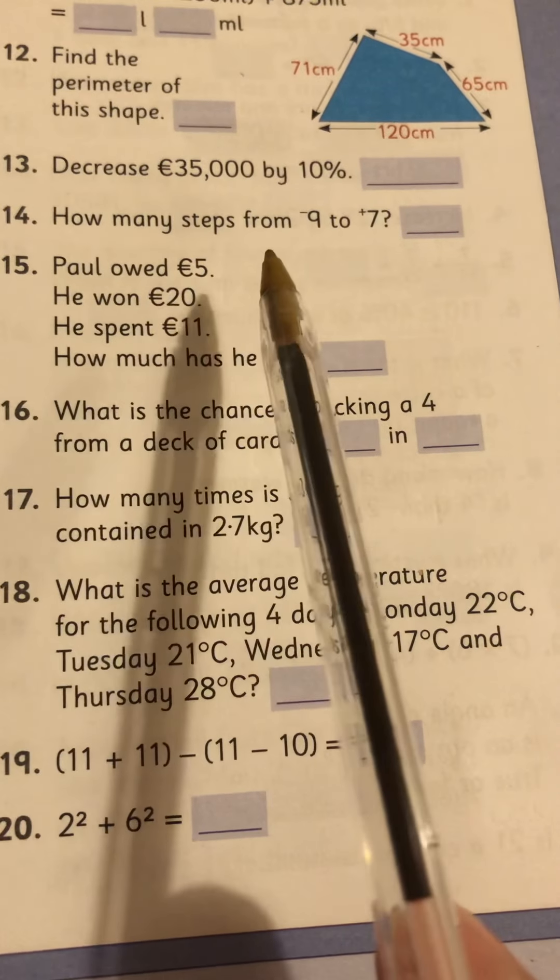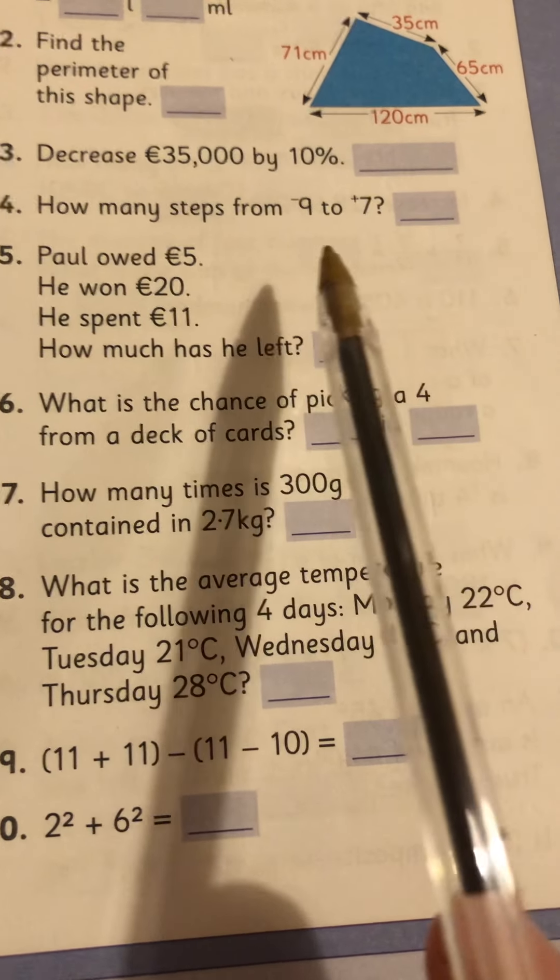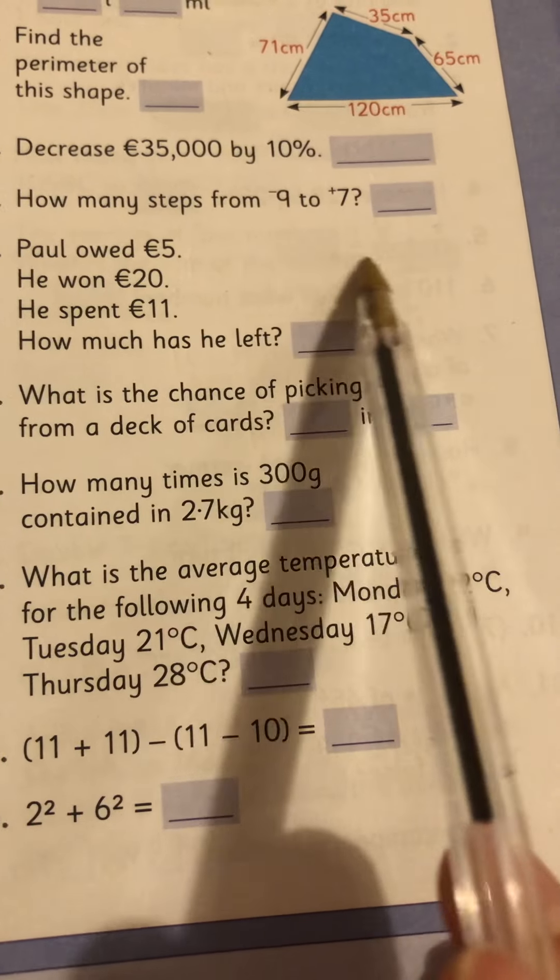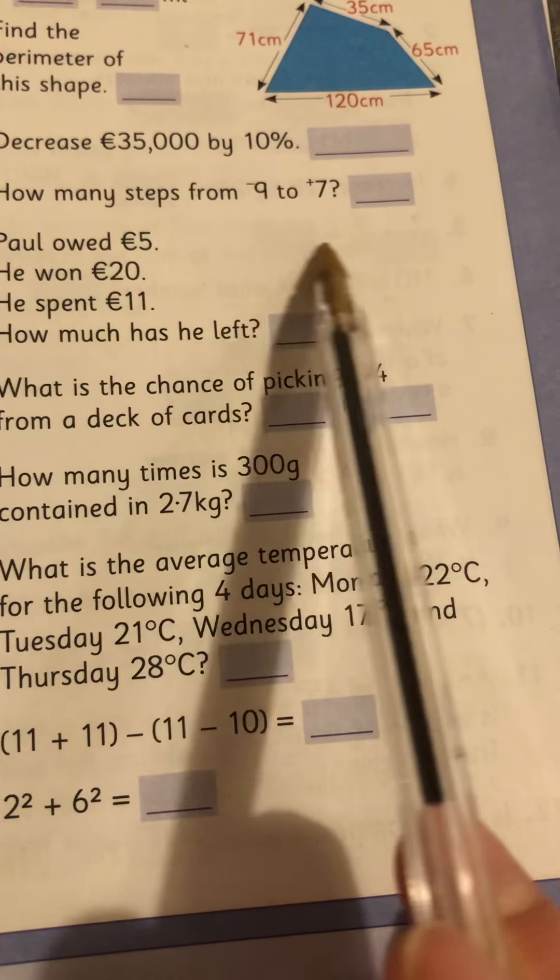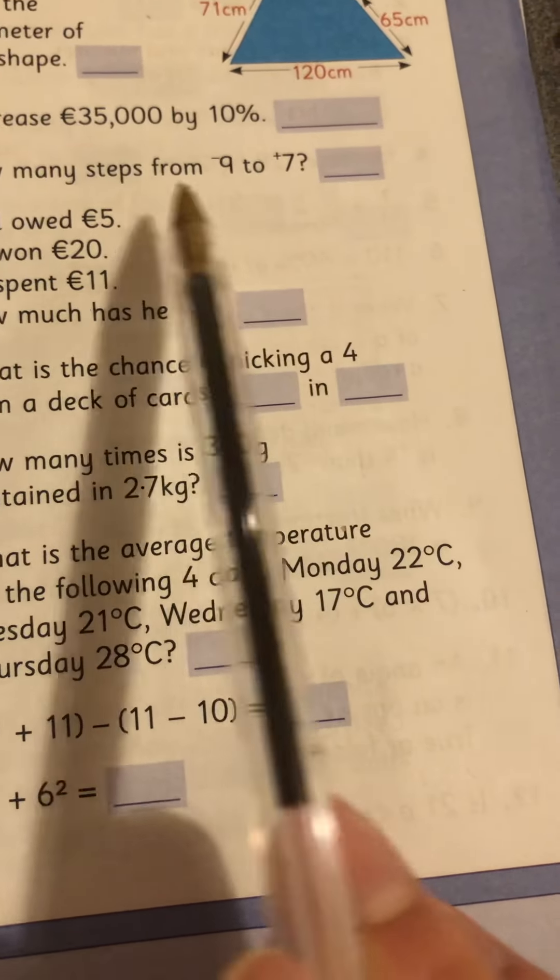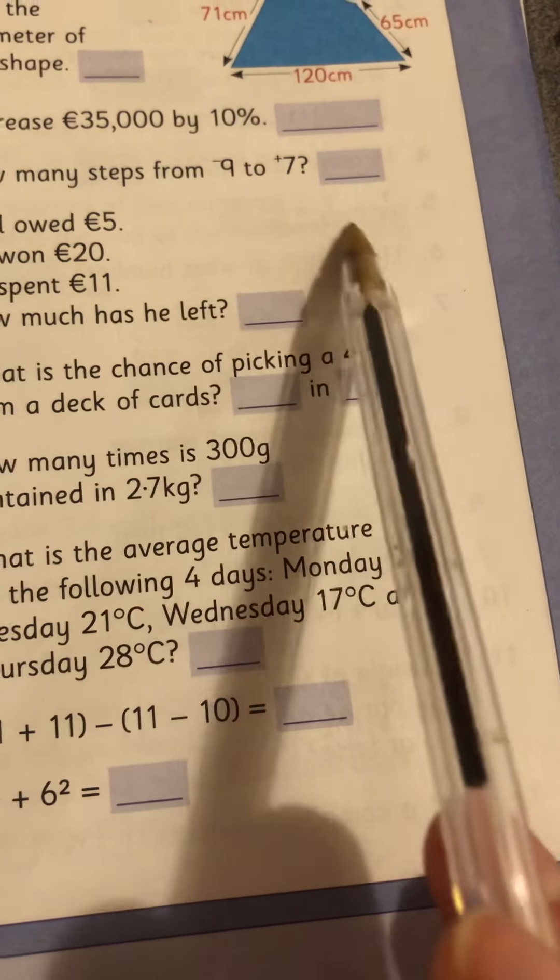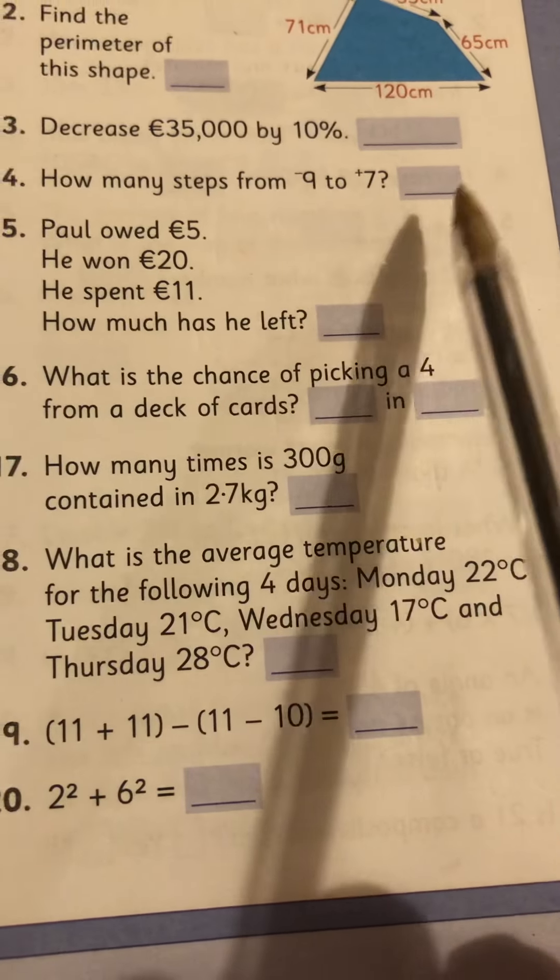Number 14, how many steps from minus 9 to 7? Again, easiest way, draw your number line. Minus 9, jump all the way up to 7. And how many jumps do you make?